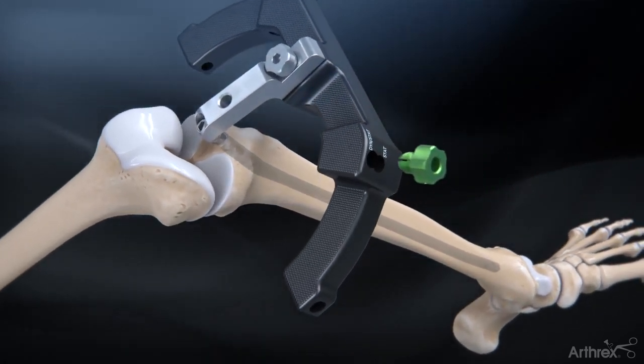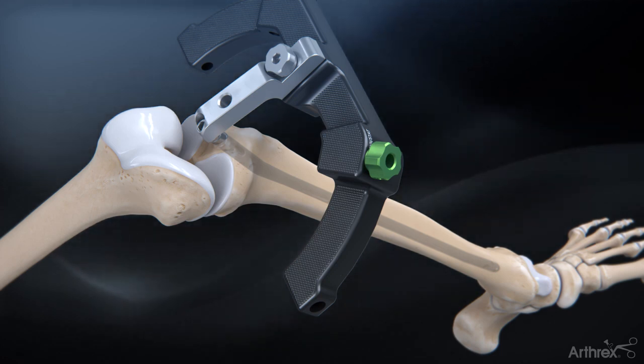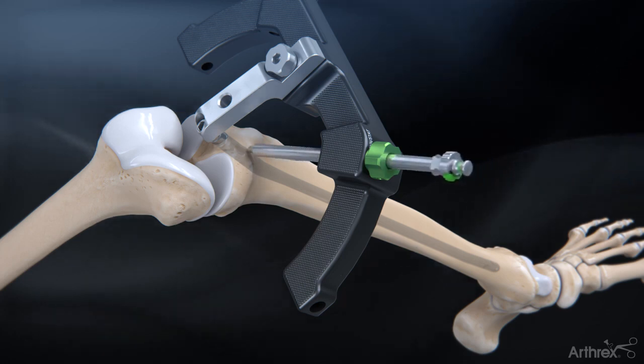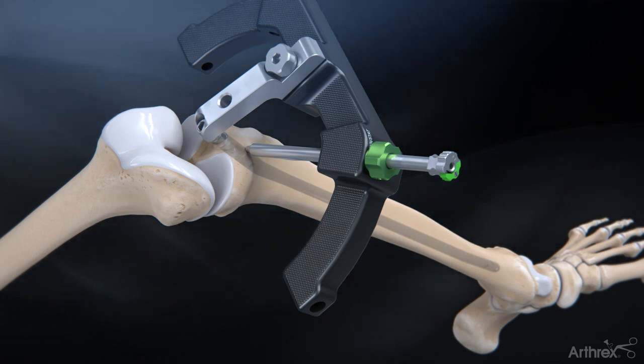Thread the green locking collar into the locking hole on the targeting module. When compression is desired, be sure to use the hole marked dynamic. Insert the assembled drill sheath, drill guide and obturator into the targeting guide until it rests on the outer cortex of the tibia.